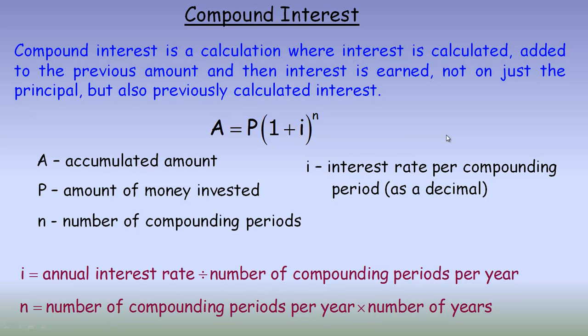This tutorial is on compound interest. Compound interest is a calculation where some kind of investment or interest is calculated and added to the previous amount, and that interest is earned in the next period — not just on the original principal, but also on any previously calculated or added-in interest. That's why it's called compounded: you actually earn interest on interest, and of course on the original principal as well.